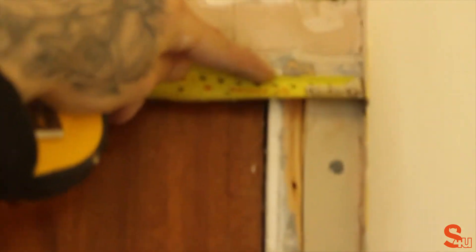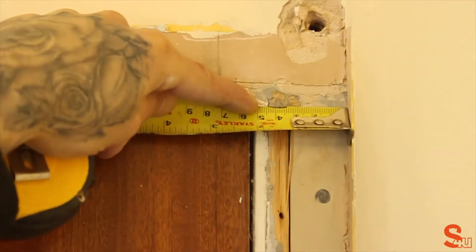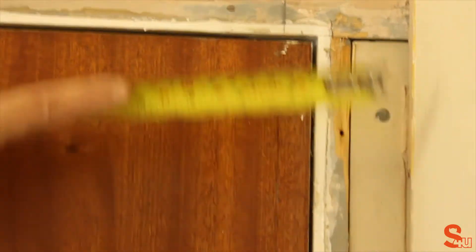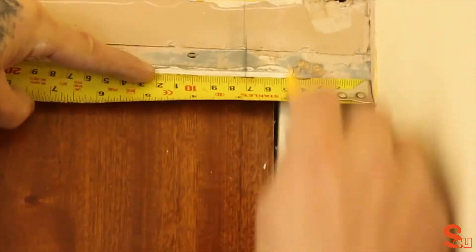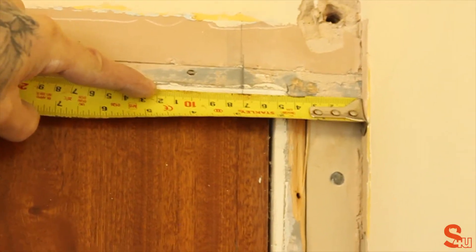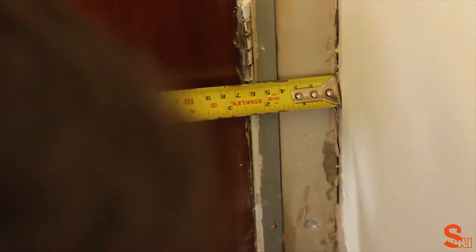Here we need to measure three points down the wall up to the 5mm mark and make a note of them. This is in case the wall's out. Which it turns out, in fact, this is slightly narrower at the bottom.